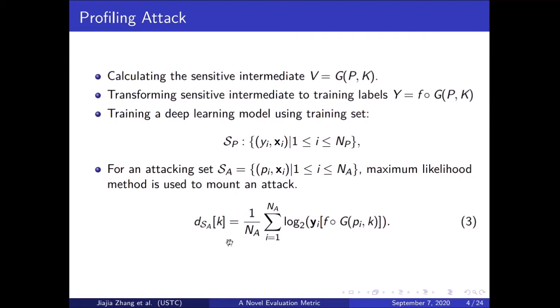For a deep learning based profiling attack, the training procedure is as follows. We first collect our side-channel leakage traces. Then we calculate the sensitive intermediate value with the key and public variable, transforming the sensitive intermediate to a label using some labeling function f. Next, we feed our model with the traces and the labels to start the training process. After training, we use the maximum likelihood method, calculating the scores for all key hypotheses and discriminating which key is most likely to be the right one by comparing their scores.